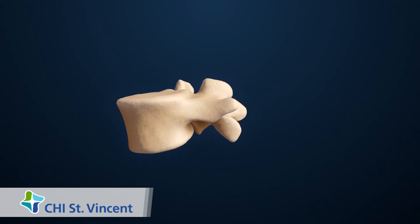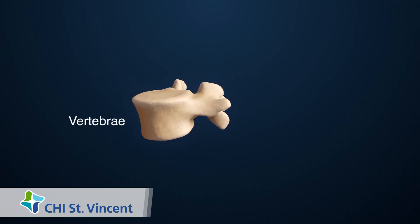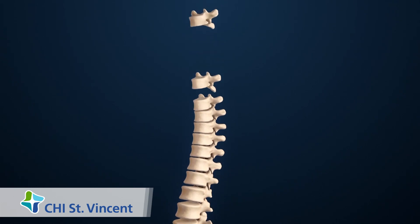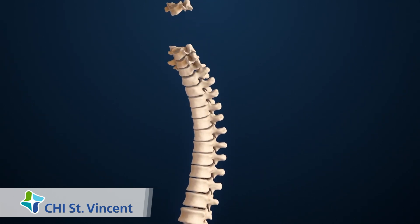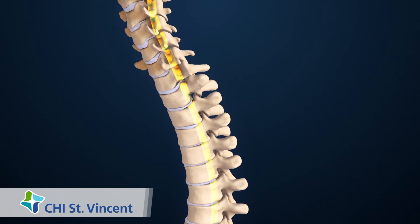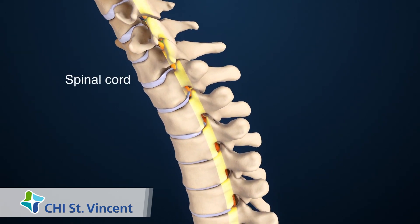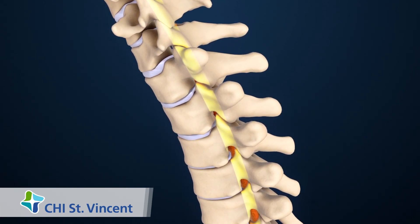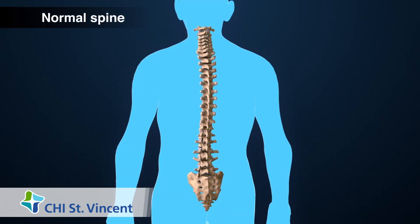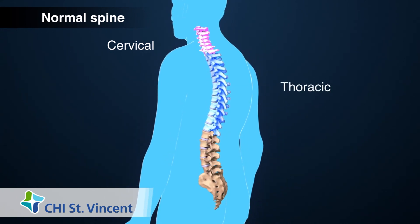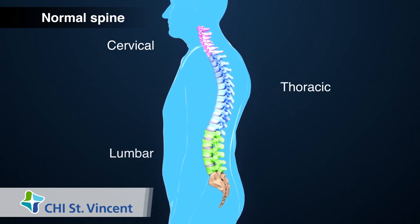The spine is made up of bones called vertebrae, which are stacked on top of each other. The vertebrae protect a bundle of nerve fibers called the spinal cord, which runs through an opening in the center of each vertebra. The main sections of the spine are the cervical, thoracic, and lumbar regions.